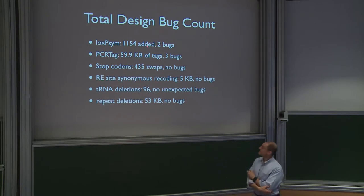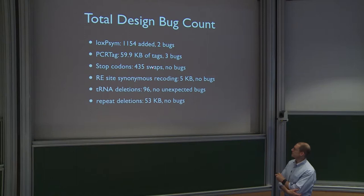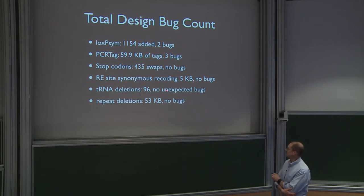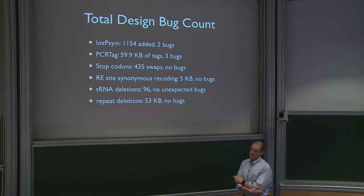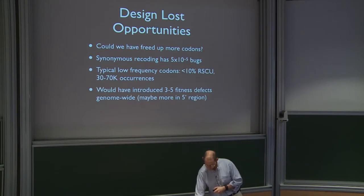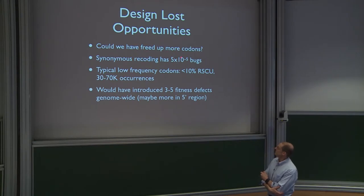Our total bug count: LoxP-Sym sites — 1,000 added, two bugs. PCR tags — 60 KB of tags, three bugs. Stop codons — no fitness defects. Synonymous recoding — 5,000 bases, no bugs. tRNA deletions — no unexpected bugs. Repeat deletions — so far no fitness defects from getting rid of any of the repeats. To me, what this means is we should have been more aggressive in our design. Synonymous recoding has a 5×10⁻⁵ bug rate.